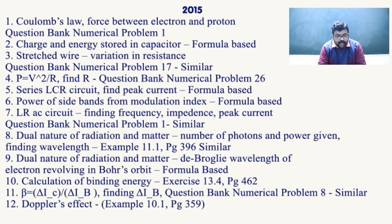Continuing 2015: LR AC circuit finding frequency, impedance, and peak current — Question Bank Numerical Problem 1, similar question with slight change in values. Dual nature: number of photons given power, finding wavelength — Example 11.1, page 396. De Broglie wavelength of an electron revolving in a Bohr orbit — formula based. Binding energy — Exercise 13.4, page 462. The formula β = ΔI_C / ΔI_B finding change in base current — Question Bank Numerical Problem 8. Doppler's effect — Example 10.1, page 359; this question was repeated.